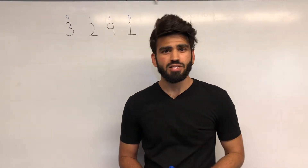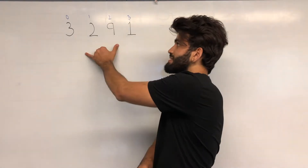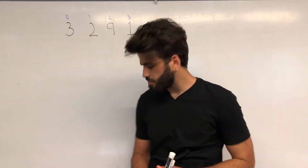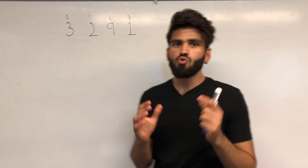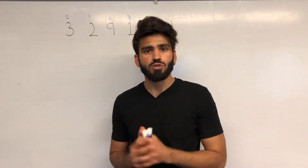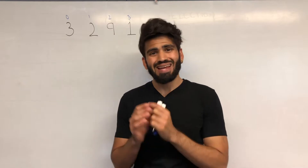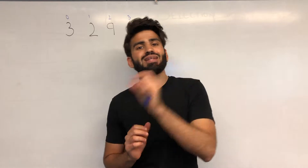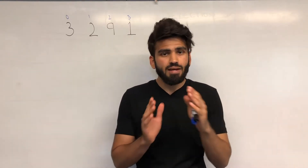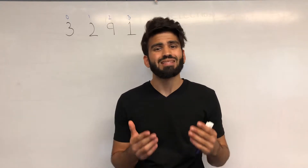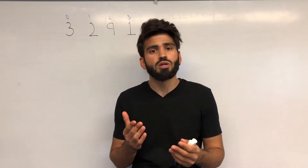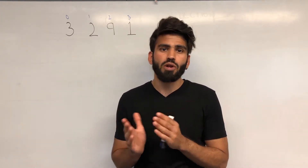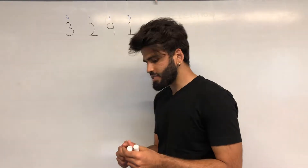Let's begin by understanding Selection Sort conceptually. We'll walk through this test area right here, sort it using Selection Sort, and then implement the code right after that. How this works is that Selection Sort iterates through the list, finds the smallest element and puts it in its rightful position, and it keeps doing that until the entire list is sorted. We're going to be sorting our list in ascending order for this tutorial.